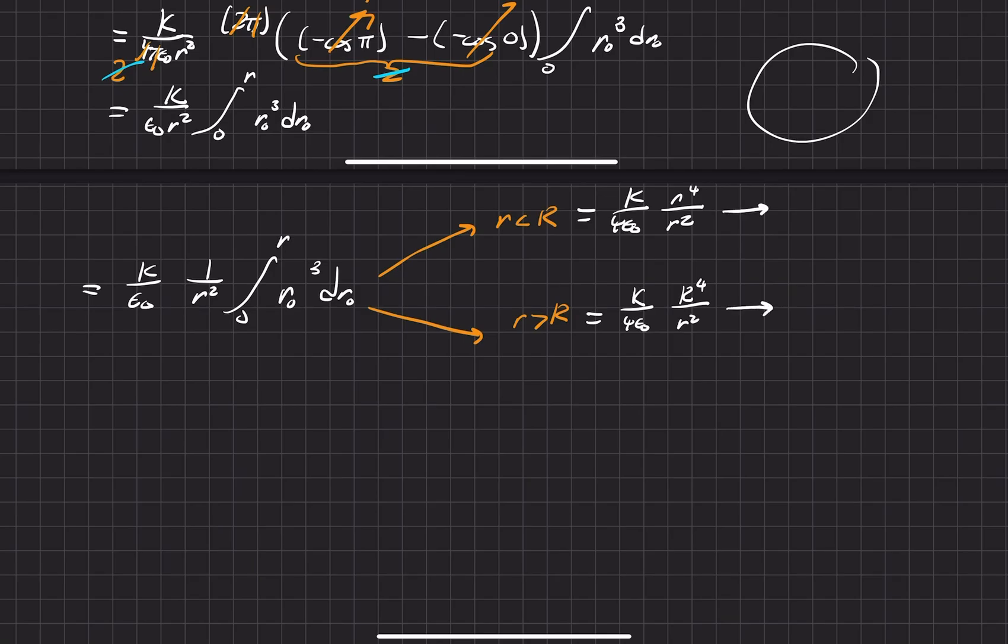That means that our electric field on the inside, so r is less than big R, is equal to k over 4 pi epsilon naught r squared r hat. And then our electric field on the outside, so r is greater than big R, is equal to k over 4 pi epsilon naught R to the 4th over little r squared r hat direction.